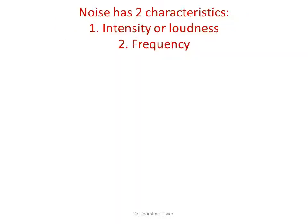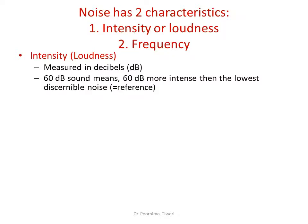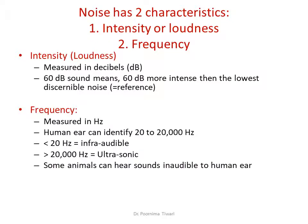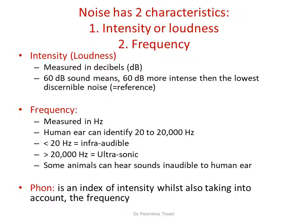Noise or sound has two characteristics: intensity or loudness, and frequency or pitch. Intensity is measured in decibels — 60 decibels would mean 60 times more intense than the lowest discernible noise, which is taken as a reference value. Frequency is measured in Hertz. The human ear can identify sounds from 20 Hz to 20,000 Hz. Below 20 Hz the sound is called infra-audible; above 20,000 Hz it is ultrasonic. Some animals can hear sound outside this range. Phon is an index of intensity of sound which also takes into account the frequency.